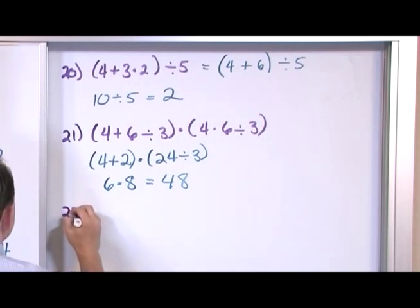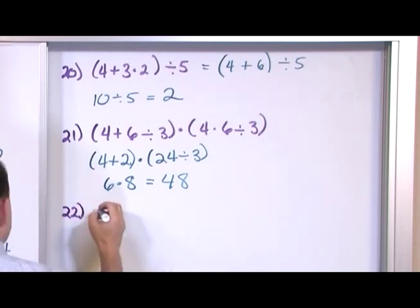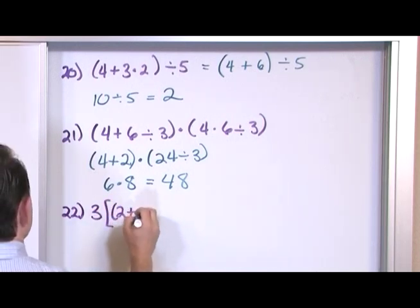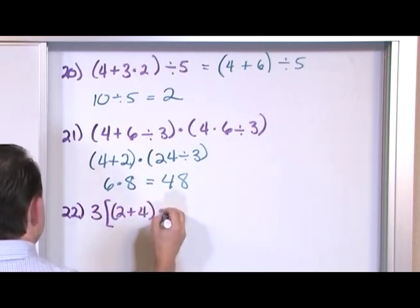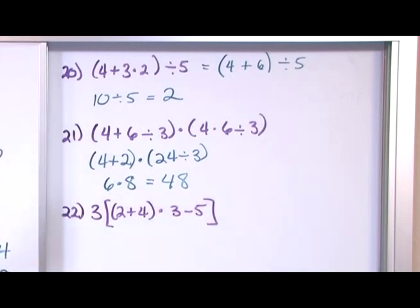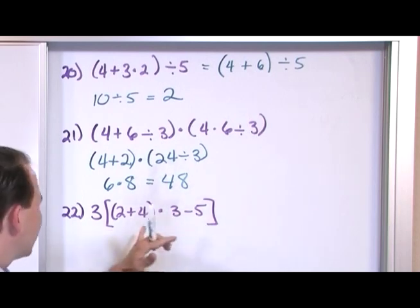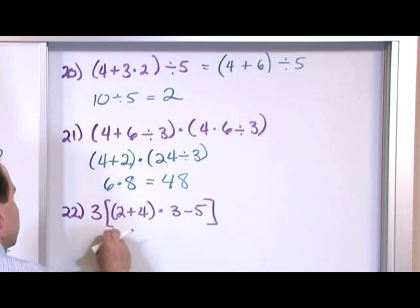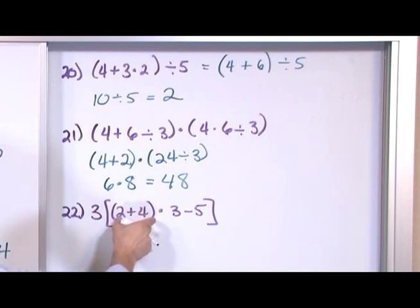Okay, let's go to 22. 3 bracket 2 plus 4 times 3 minus 5 close bracket. Now you see why we use brackets, because if I use parentheses here, it's just going to kind of run together a little bit. But now when I use different symbols, I can zero in and I can say, okay, well I've got a bracket here but I've got a parentheses, and I always work inside to outside, so I'm going to work on this guy first.